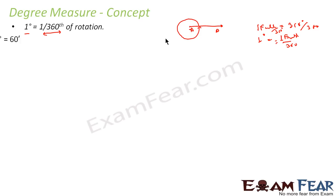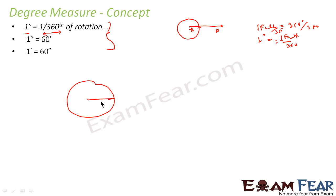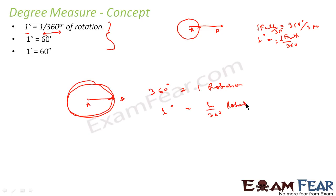When converting degrees to smaller units: one degree is equal to 60 minutes, and one minute is equal to 60 seconds. This is the convention to remember — the same as a clock. About a point, we rotate to get one full rotation of 360 degrees, and one degree equals 1/60th of that.